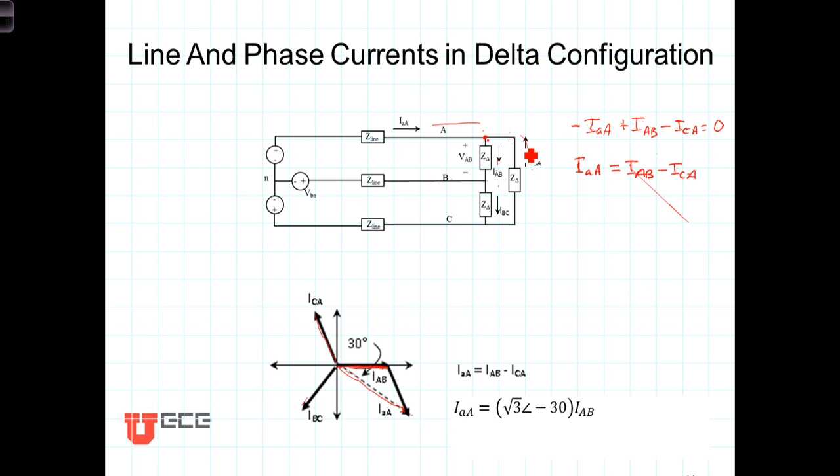And this time, the phase angle of the line current will be lagging the phase angle, the corresponding phase angle of the phase current by 120, I'm sorry, by 30 degrees.